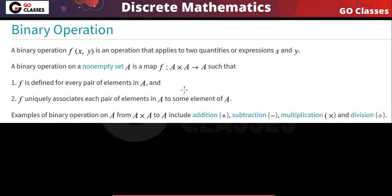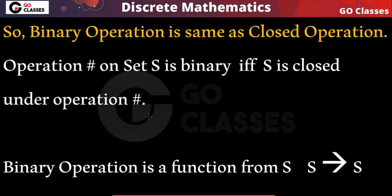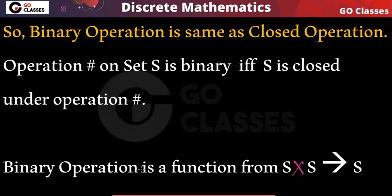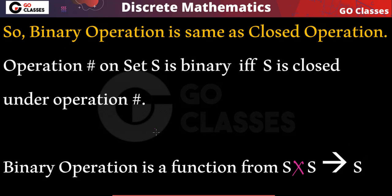Binary operation is nothing but a map — a function from A cross A to A. Binary operation is the same as closed operation. Closure property is the same as binary operation — both are the same thing. Binary operation is a function from S cross S to S: it takes two elements of S and gives another element of S, and this is the definition of closure property.